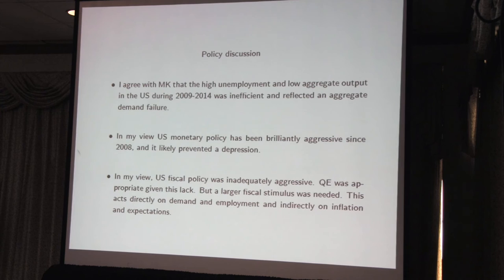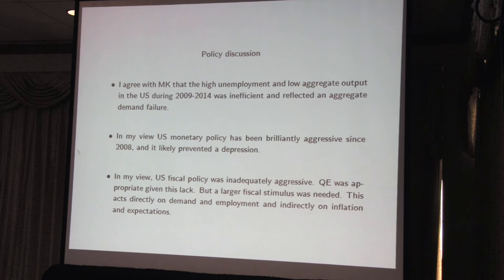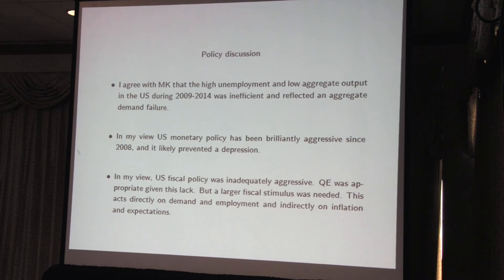I completely agree with Mordecai that high unemployment and low aggregate output in the United States over the 2009–2014 period was inefficient and reflected aggregate demand failure. In my view, U.S. monetary policy has been brilliantly aggressive during this period and likely prevented a depression. In my view, fiscal policy was woefully inadequate. QE and the various extended monetary policies were appropriate given that lack, but a larger fiscal stimulus would have been very appropriate and was very needed. It was a depressing fact that it wasn't done on a bigger scale. Fiscal policy operates directly on demand and employment and then indirectly on inflation expectations.